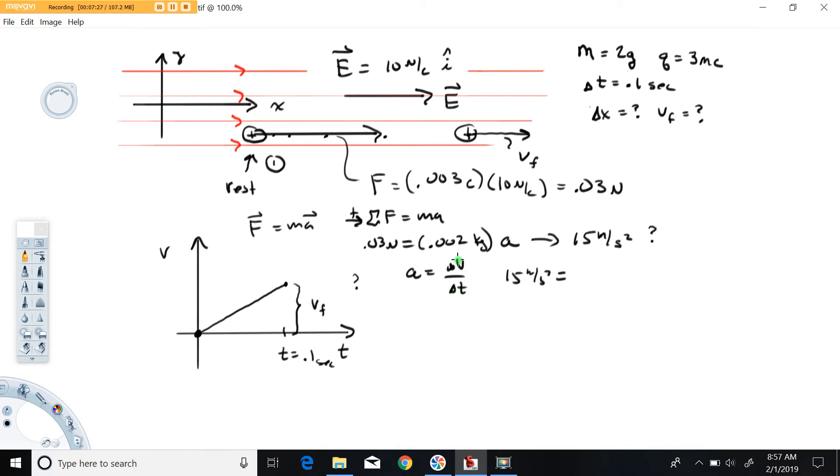The delta v over delta t represents the slope of this graph. The delta v is what we're calling v final. The delta t is 0.1 seconds.